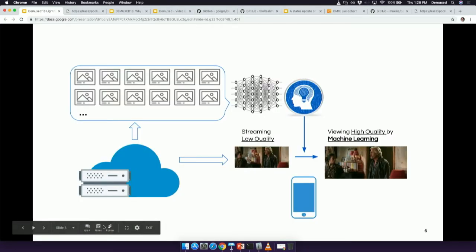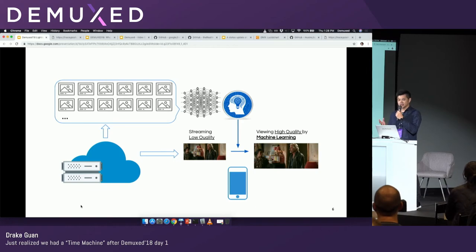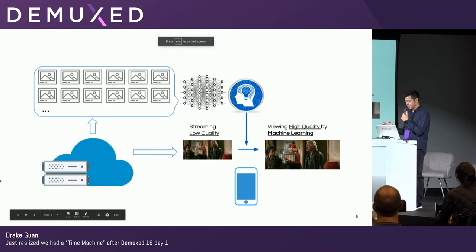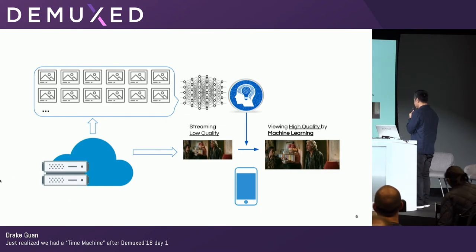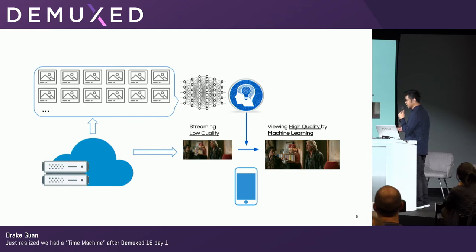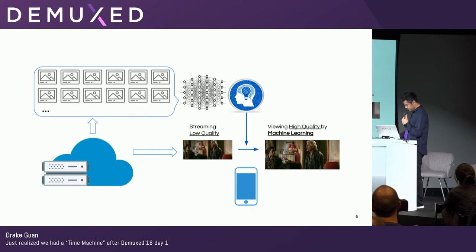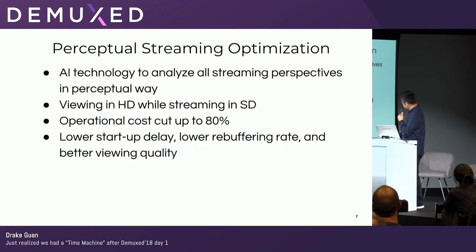Basically what we are trying to solve is the bandwidth operation cost. Initially everyone just focuses on video encoding, different codecs, next generation codecs. What we realized is that we can actually stream low quality, SD content video, but have it perceived as HD or even FHD. That's roughly the whole idea, so that's why we made this a perceptual streaming operation system.